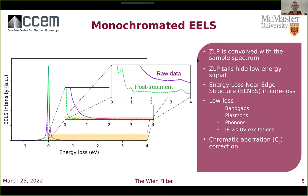The zero loss peak is convolved with the true spectrum from the sample and can result in blurring spectral features together. In the low loss regime, details of the zero loss peak can also hide low energy signals, making them difficult or impossible to identify. Use of a monochromator helps us to reveal, for example in the core loss, the near edge structure, allowing us to identify oxidation or bonding states in different elements.